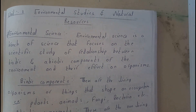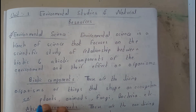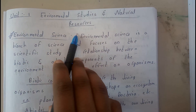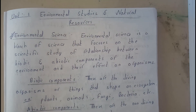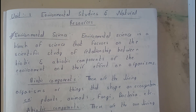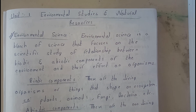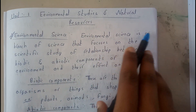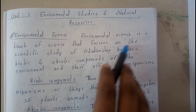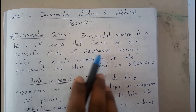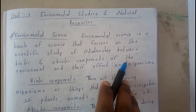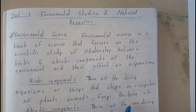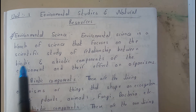Hello guys, welcome back to our next video series. In this video series, we will be covering the first chapter of environmental science - environmental study and natural resources. In this first video, we will be covering all about environmental studies, its definition, its scope, and its importance. Environmental science is a branch of science that focuses on the scientific study of the relation between biotic and abiotic components of the environment and their effects on organisms.